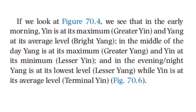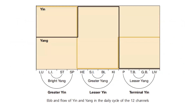Yin is at its minimum, which is the lesser yin, and yang at its minimum, which is the lesser yang. In the evening or night, yang is at its maximum while yin is at its average level, which is the terminal yin. Here is another illustration showing the ebb and flow of yin and yang in the daily cycle of the 12 channels, from the greater yin to the terminal yin, and from the brighter yang to the lesser yang.